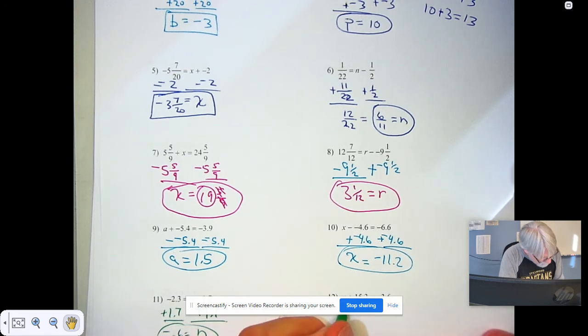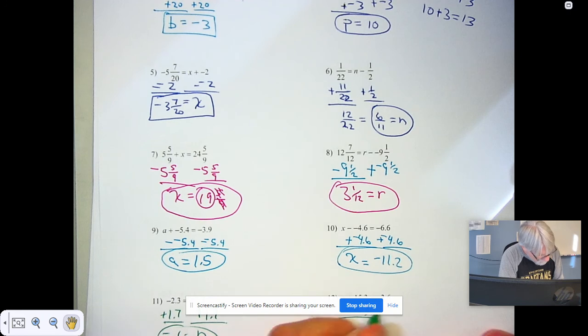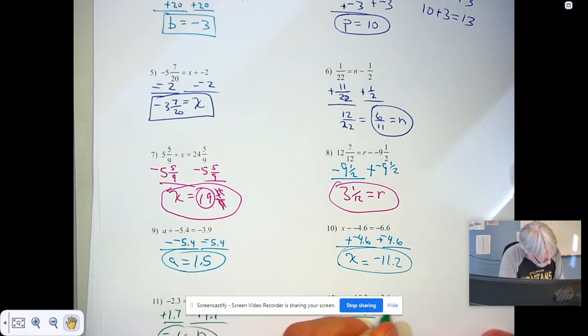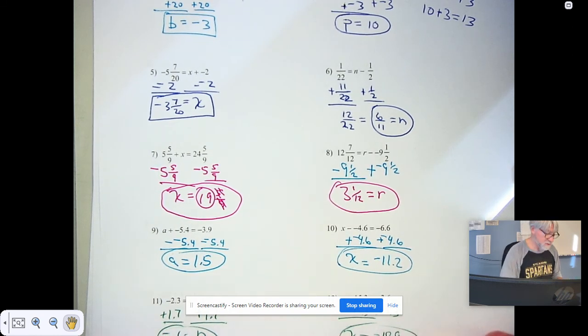Instead of adding, subtract. And you get x. When I subtract 15.3, I get negative 18.9. Punch the numbers in the calculator, do the calculating to find your answer.